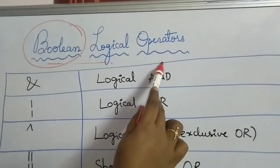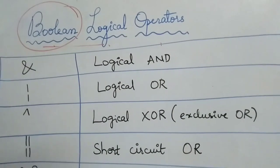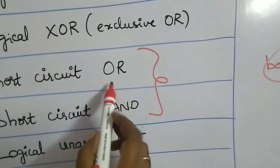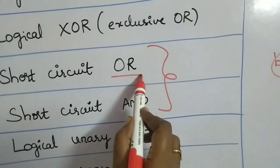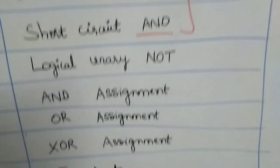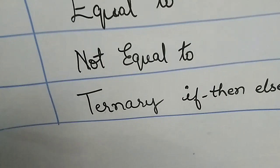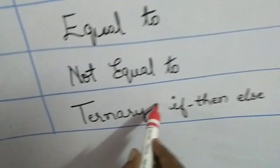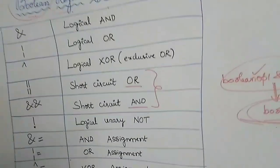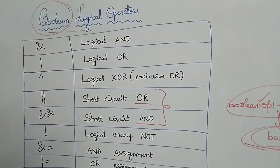That is the reason why we call them Boolean logical operators. I will also be covering short circuit operators, which are logical OR and logical AND, and also the ternary operator, which is the question mark colon. We will be seeing all three kinds of operators with examples now.